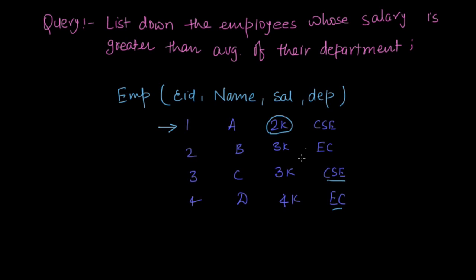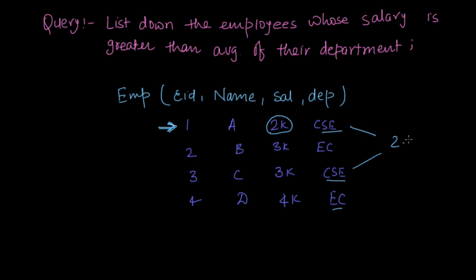We have to compute the average salary each time we consider a record, to decide whether to select it or not. Since SQL has no storing mechanism, data will not be pre-computed and stored. So every time, for each record: I go to the record, I see what the department is, then I calculate the average salary of that department. For the first record the average salary of CSE comes out to 2.5k.